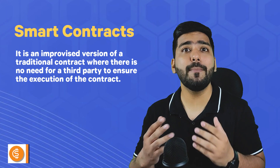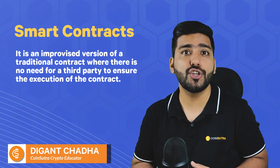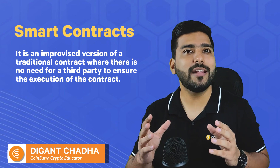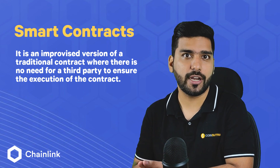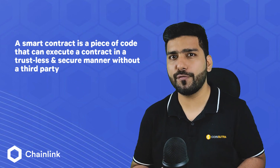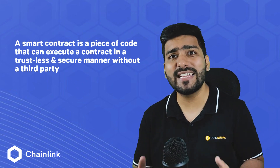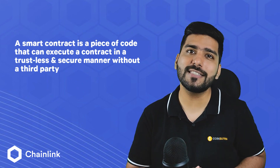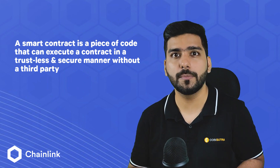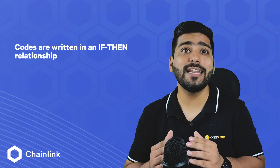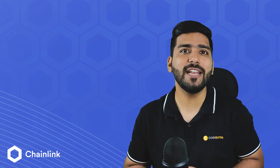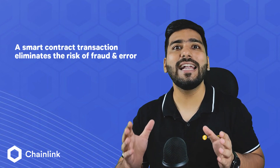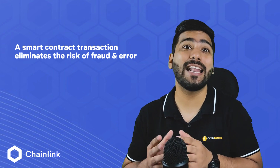A smart contract is an improved version of a traditional contract where there is no need for a third party to ensure the execution of the contract. A smart contract is a piece of code that can execute a contract in a trustless and secure manner without a third party. These codes are written in an if-then relationship. Thus, a smart contract transaction reduces the human element from execution and eliminates the risk of fraud and error.